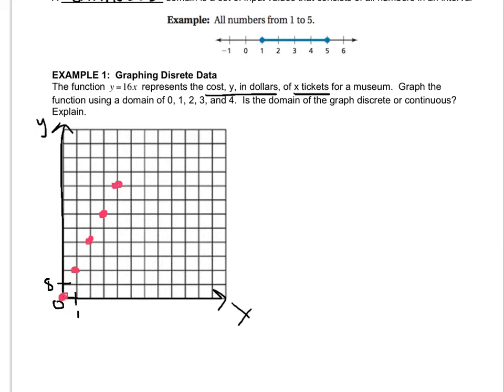Now before you connect it, I want you to think. Can you connect it? Can you have 1.5 tickets? No. So you can't connect them. You just leave them as dots.